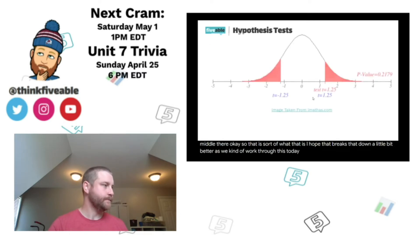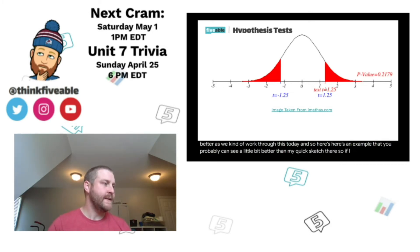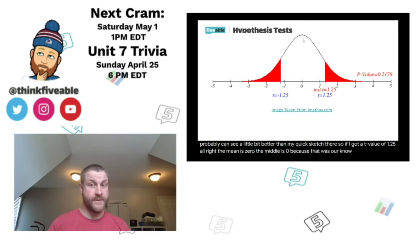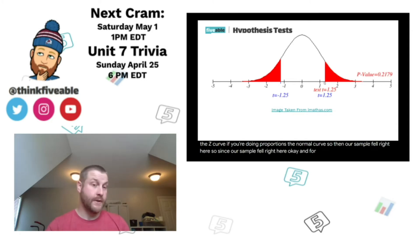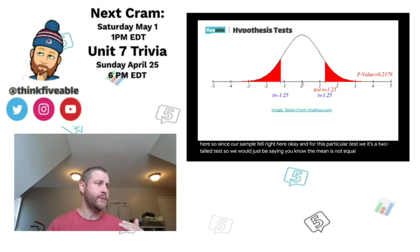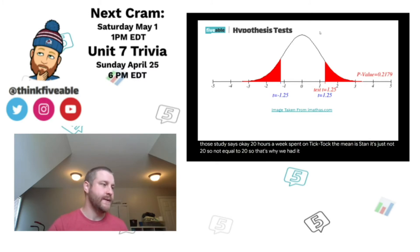Here's an example you can see better than my quick sketch. If we got a t-value of 1.25, the mean is zero because if observed equals expected they subtract to zero — that's why the t-curve is centered at zero. Our sample fell at 1.25 on the distribution. For this particular test it's a two-tailed test — we're saying the mean is not equal to whatever the study says, like not equal to 20 hours per week. Not specifying greater than or less than, just not equal.